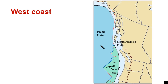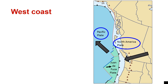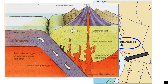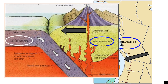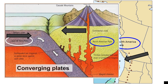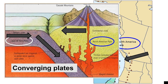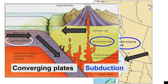Let's take a look at the west coast. Here is the Pacific plate, moving in a northwest direction. Then you've got the North American plate, moving in a southwest direction. And then the Juan de Fuca plate, moving in an easterly direction. Here's a picture showing the North American plate moving west and the Juan de Fuca plate moving east — they're called converging plates. But the Juan de Fuca plate is also moving under the North American plate, and we call that subduction: when one plate moves under another.